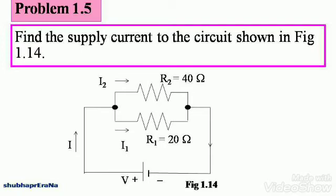Since we've learned a few basics of the parallel circuits and the currents, let's go to a problem. Problem 1.5: Find the supply current to the circuit shown in figure 1.14. Here is figure 1.14. You can note this down. The total current is I, the total voltage is V, and the currents across resistances R1 and R2 are respectively I1 and I2.